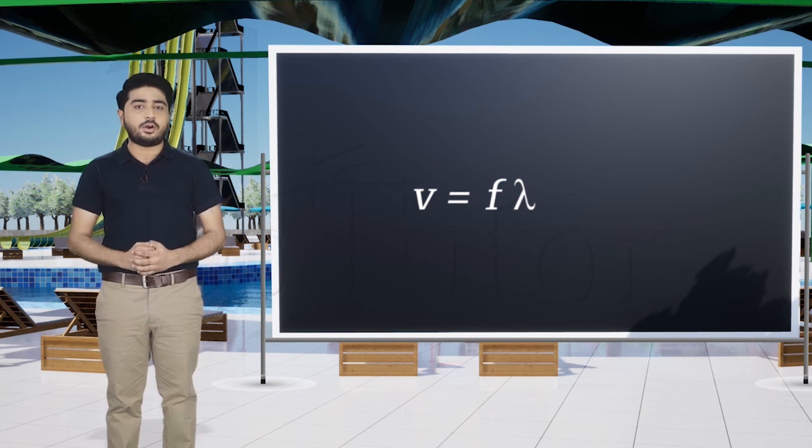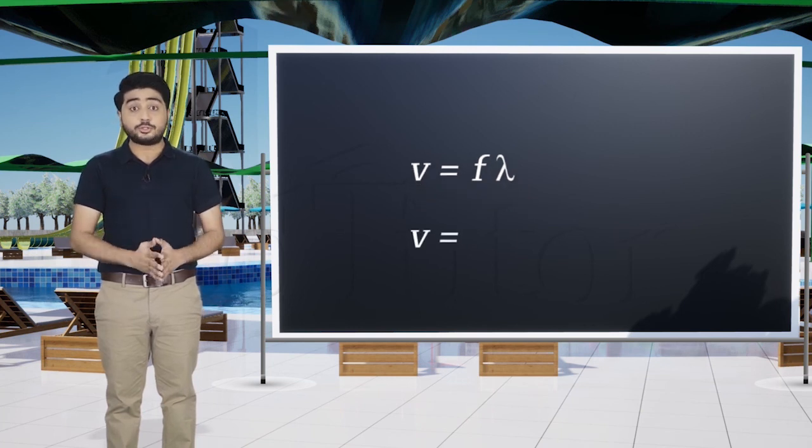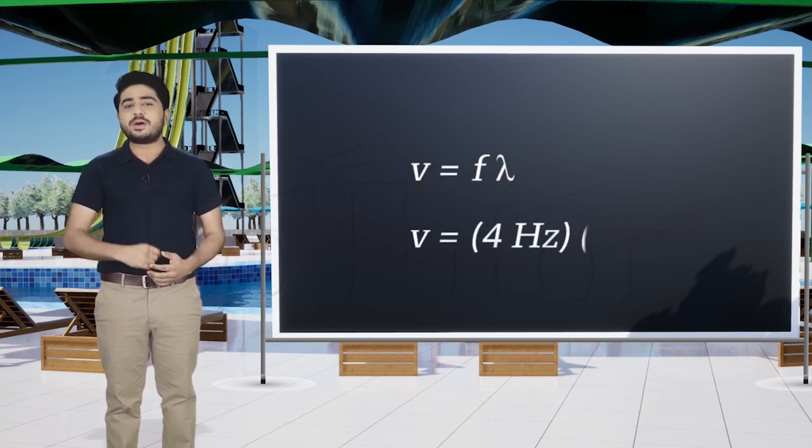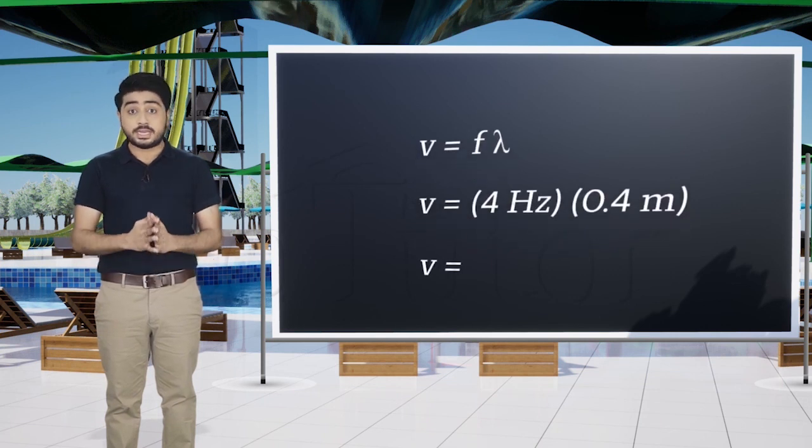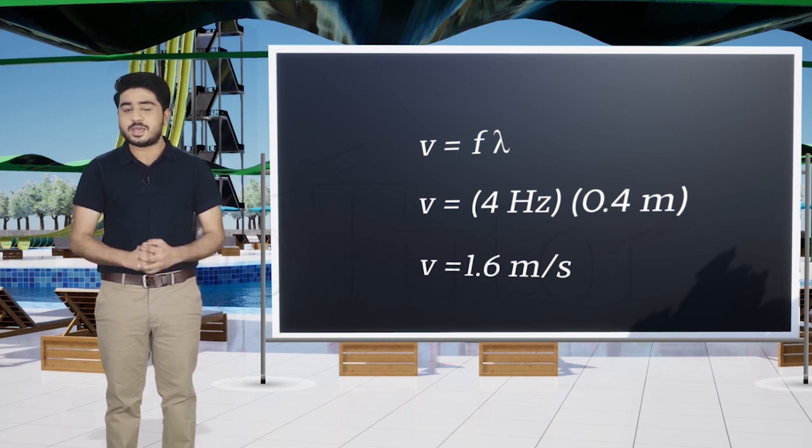By inserting the values into the formula, we get v equals 4 hertz multiplied by 0.4 meters, which gives us the answer velocity equals 1.6 meters per second.